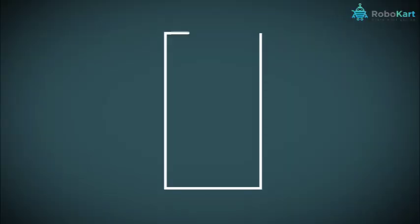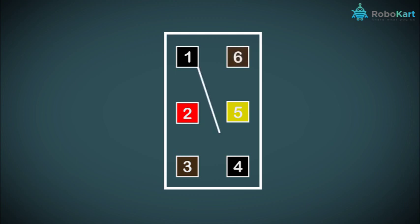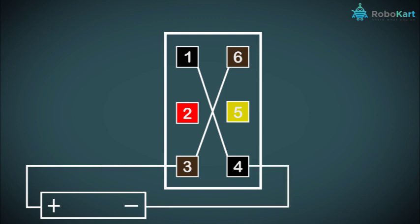Now we'll see the internal connection of this DPDT switch. As you can see, there are six terminals in the box. Let us color each terminal: Terminal 1 as black, Terminal 2 as red, Terminal 3 as brown, Terminal 4 as black, Terminal 5 as yellow, and Terminal 6 as brown. We'll connect Terminal 1 with Terminal 4 and Terminal 3 with Terminal 6. The battery positive terminal will be connected to Terminal 3 and the negative terminal to Terminal 4.